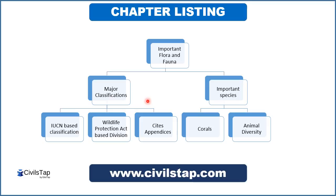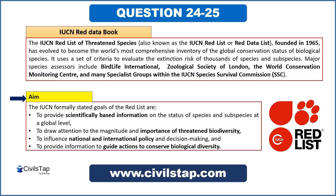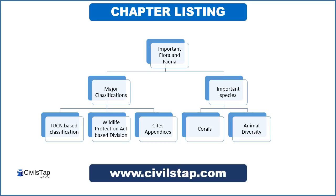Let us try to answer these questions by studying the topic of major classifications. We have to study three types of classification: first would be IUCN-based classification, second will be Wildlife Protection Act-based divisions, and third would be CITES, a major intergovernmental agreement that has given some appendices that we will be studying.